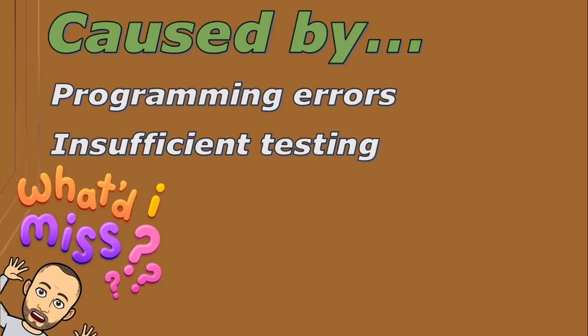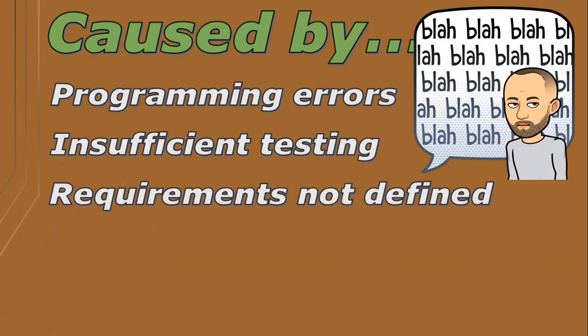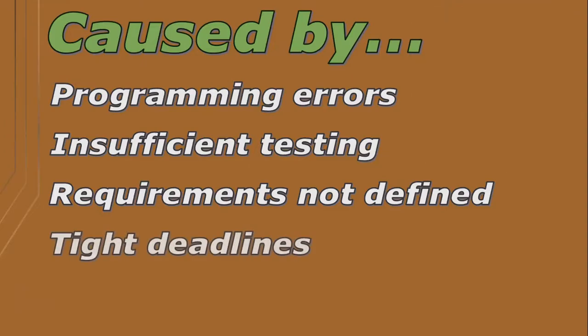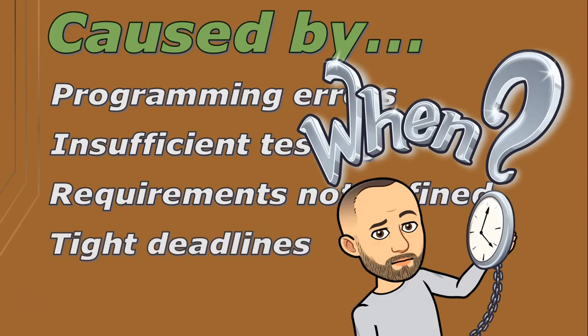When designing a program for someone else, errors could occur if the requirements are poorly defined. If the requirements are unclear or incomplete, it can lead to errors during development. The pressure of tight deadlines or time constraints can also result in development being rushed, which can lead to overlooked errors.